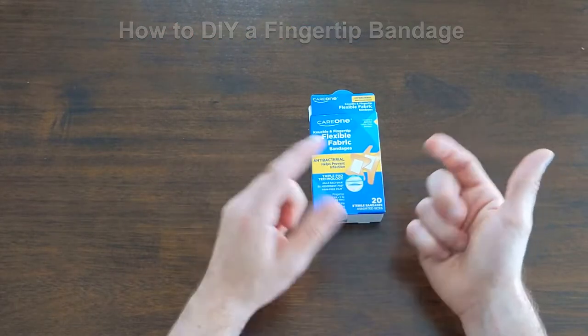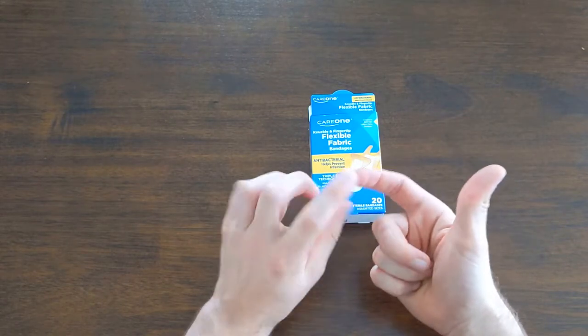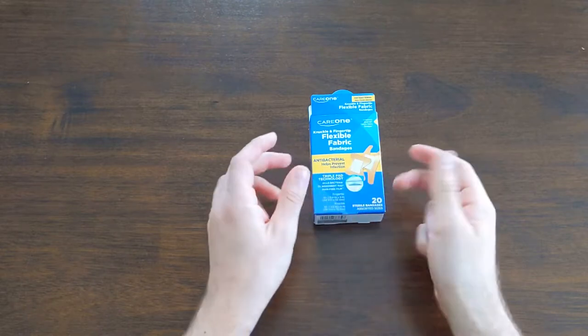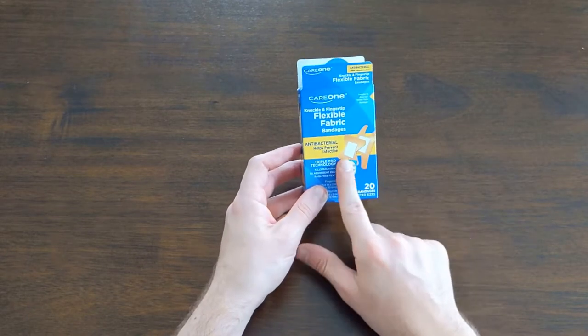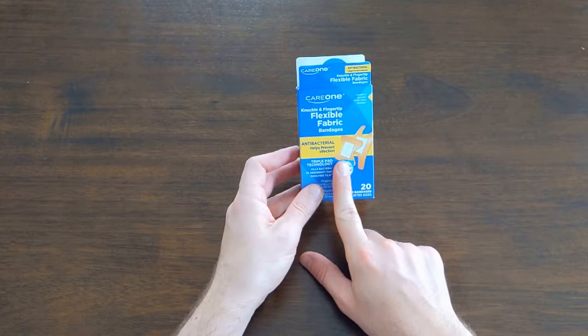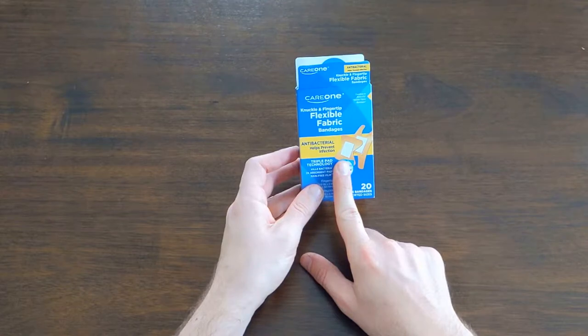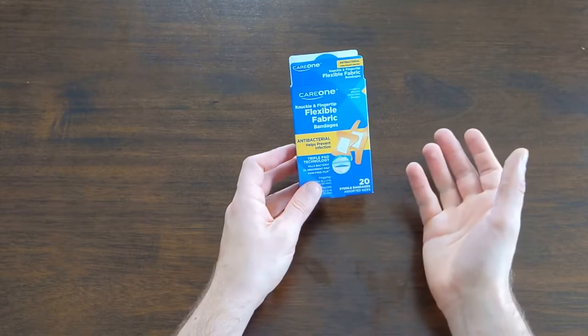So if you were to get a cut or something at the tip of your finger, it's kind of hard to bandage it up, especially with a typical bandaid. Ideally what you could use is this kind of butterfly-shaped one, and that gives you really good coverage of a cut on your fingertip. If you don't have one of those on hand...